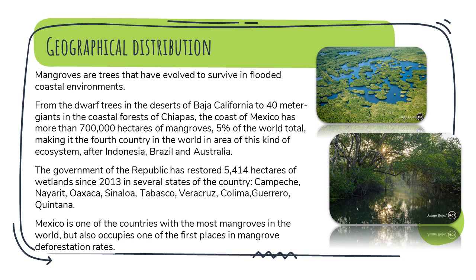Geographical distribution. Mangroves are trees that have evolved to survive in flooded coastal environments. From the dwarf trees in the deserts of Baja California to 40-meter giants in the coastal forests of Chiapas, the coast of Mexico has more than 700,000 hectares of mangroves — 5% of the world total — making it the fourth country in the world in area of this kind of ecosystem, after Indonesia, Brazil, and Australia.